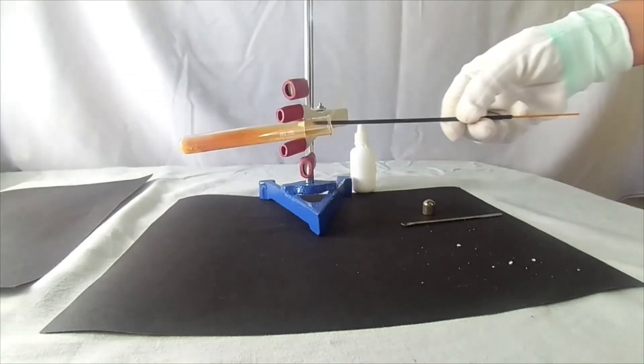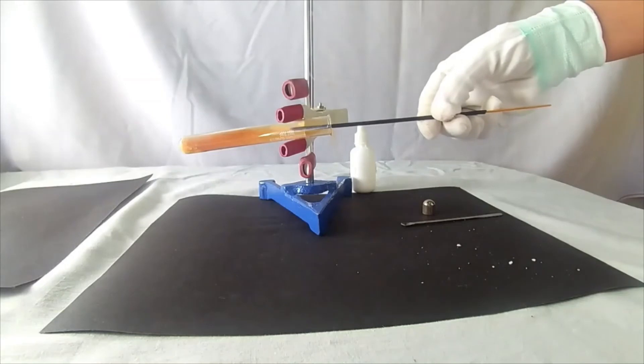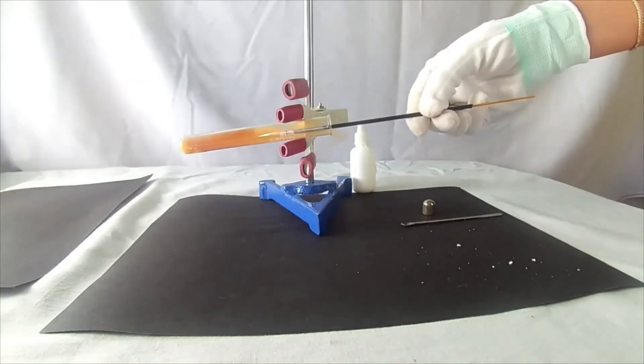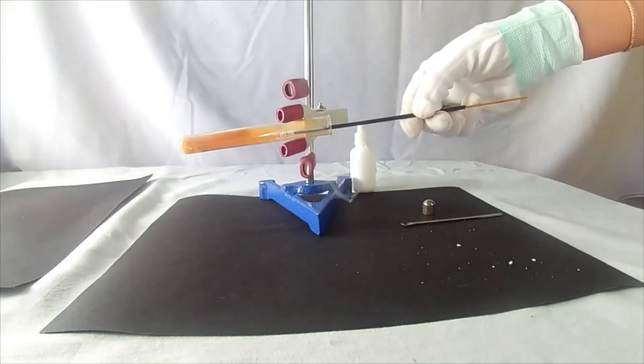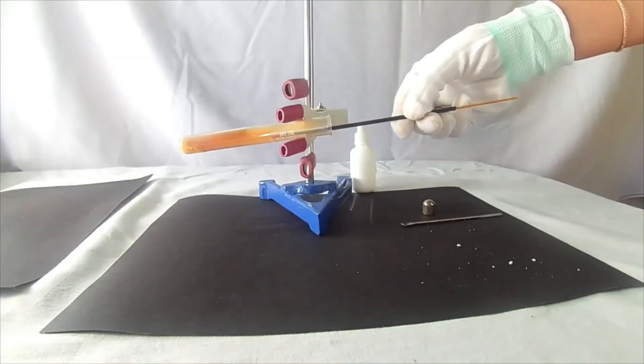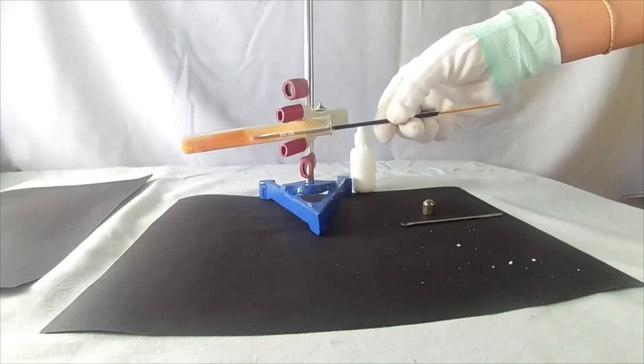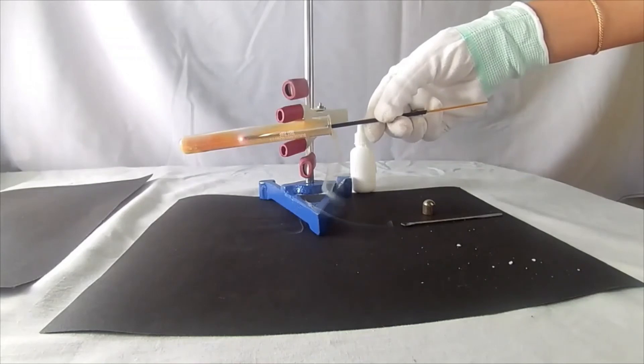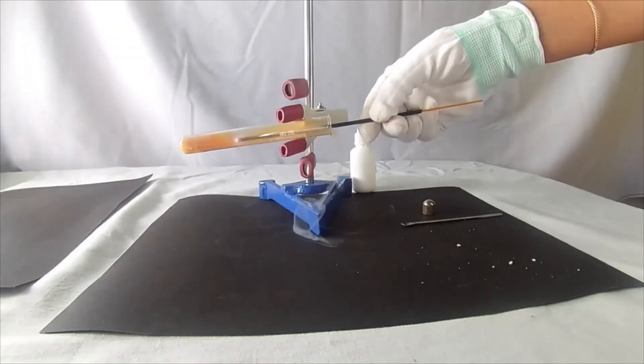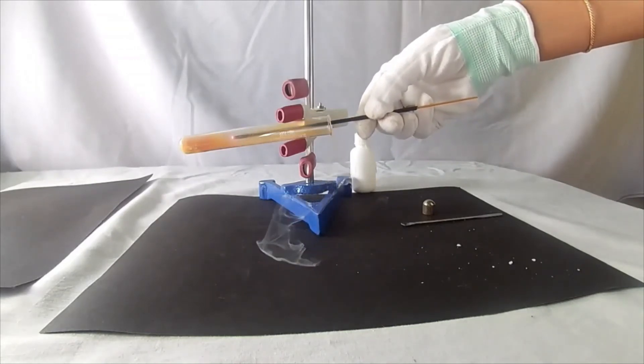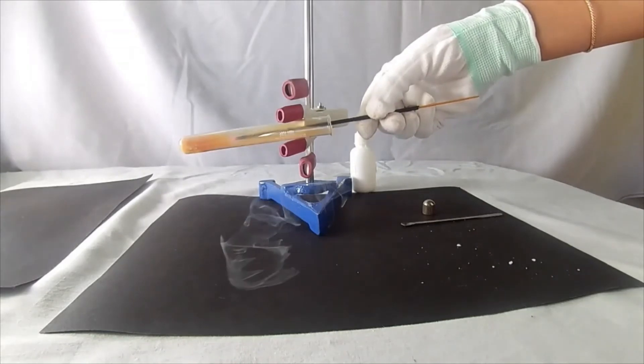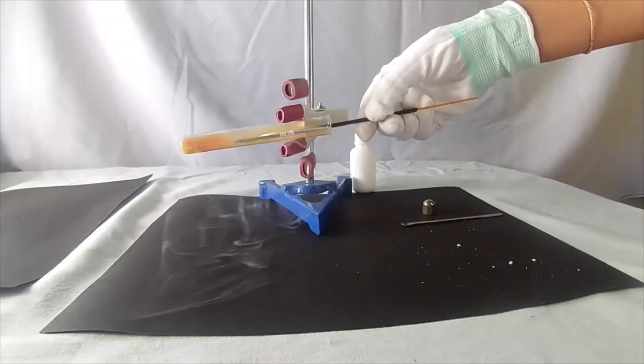Introduce a burning splinter into the test tube. It catches fire indicating the presence of oxygen. Observe carefully. Yes, it is. Oxygen is present inside the test tube.